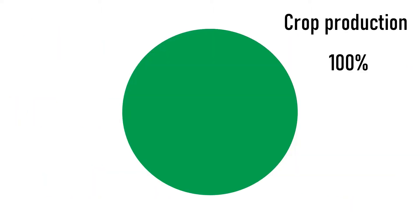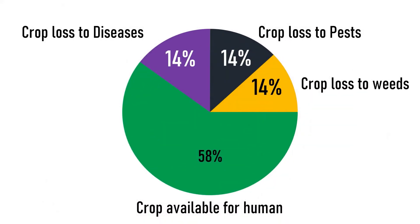Let us consider the yield of any product as 100%. Out of this, all the 100% yield will not be available for human consumption owing to crop loss. Approximate crop loss can be shown with these 5 charts with data from agencies involved in agriculture. As per the data, only 58 to 63% of the crop is available to humans. The rest goes to weeds, pests and diseases, in almost equal proportion of 14% each.